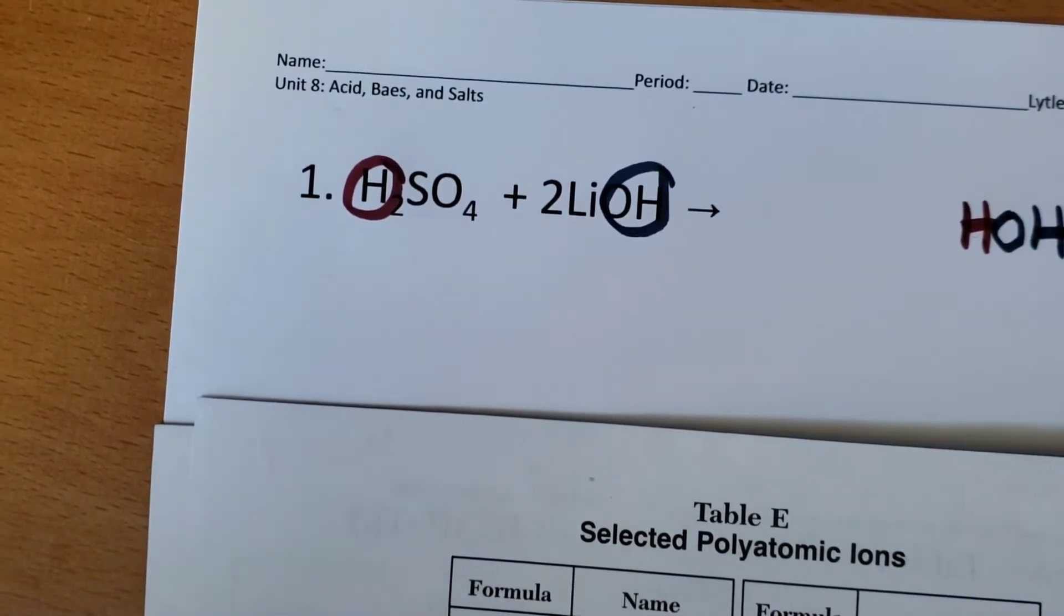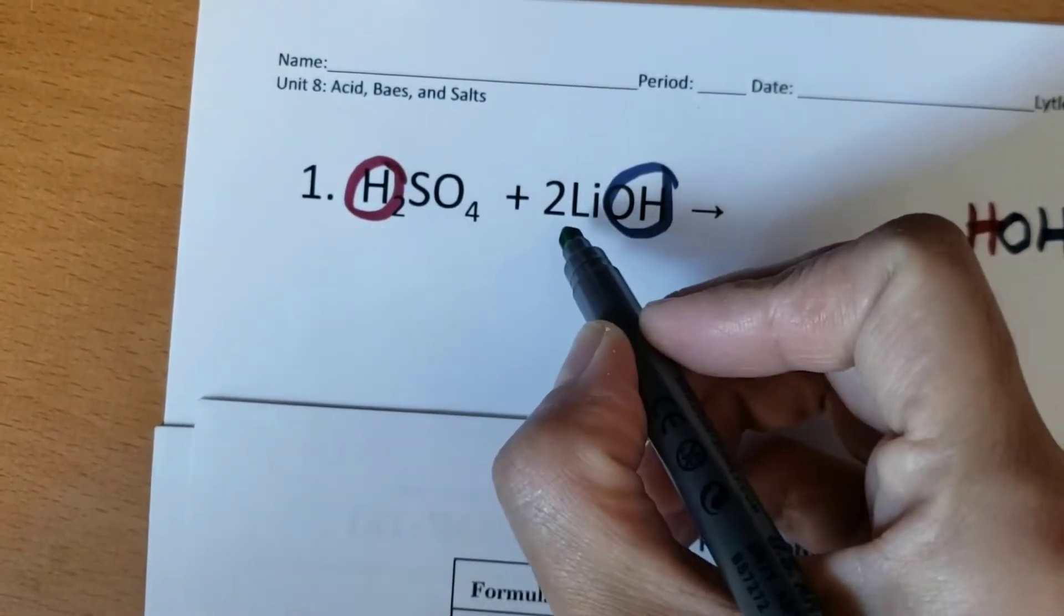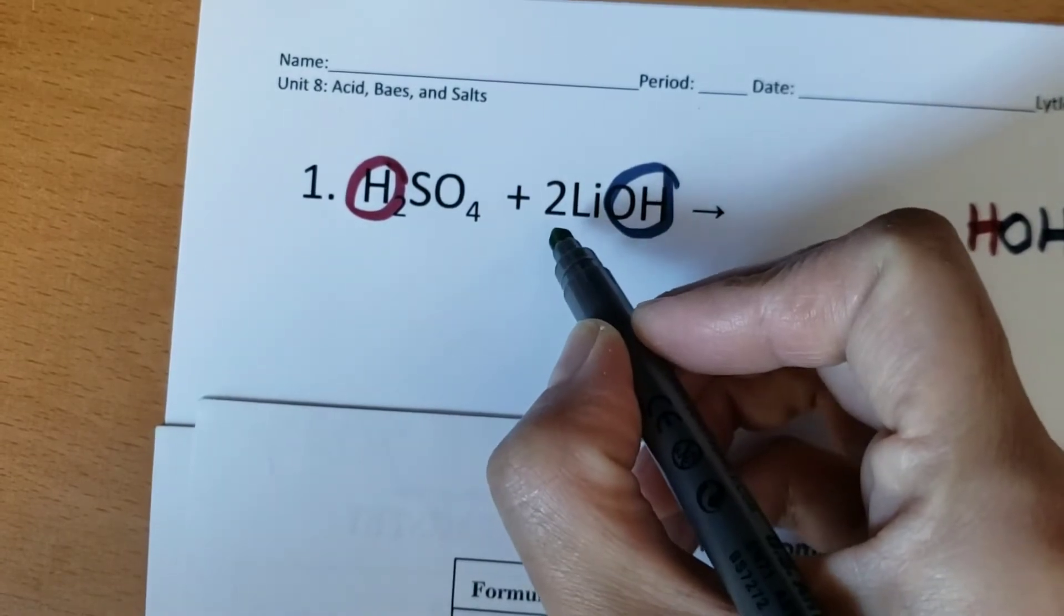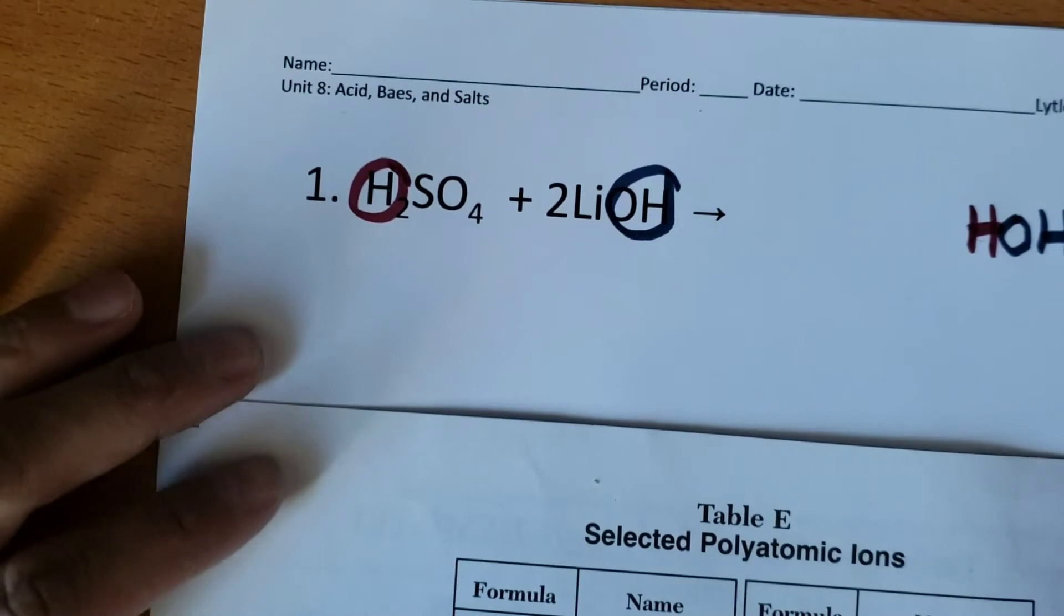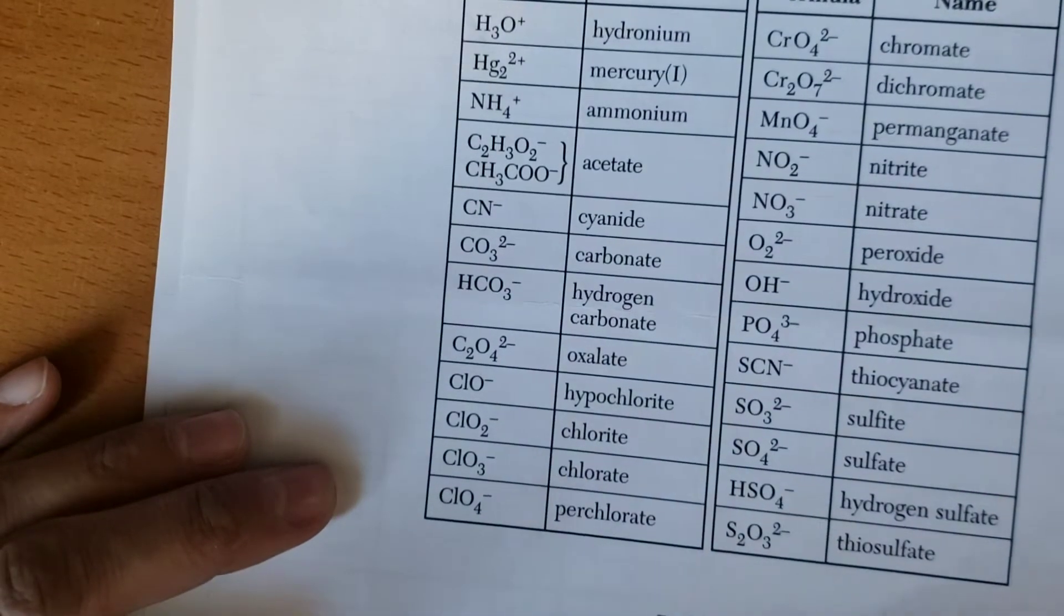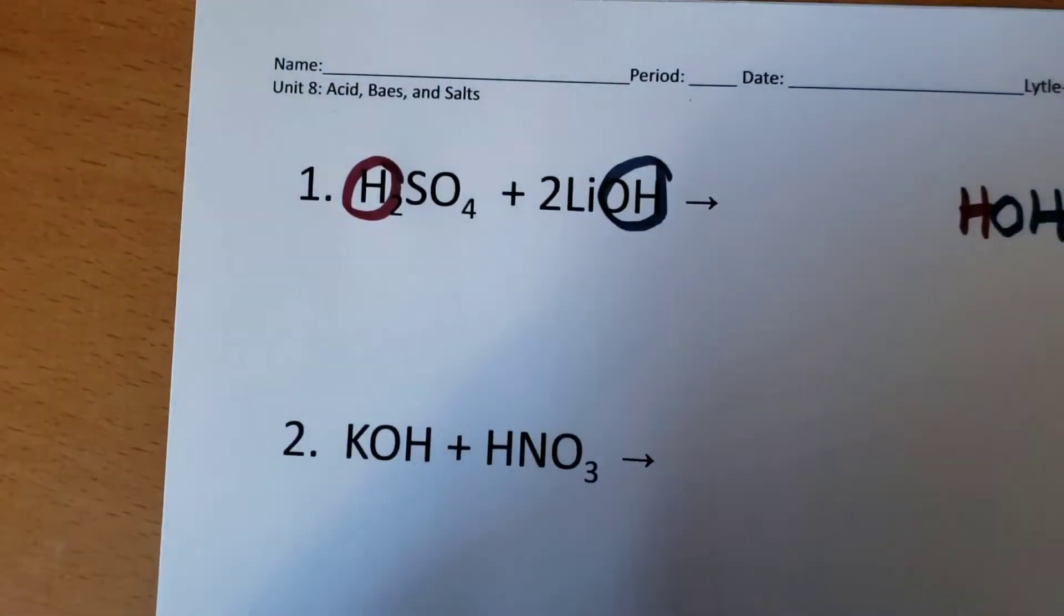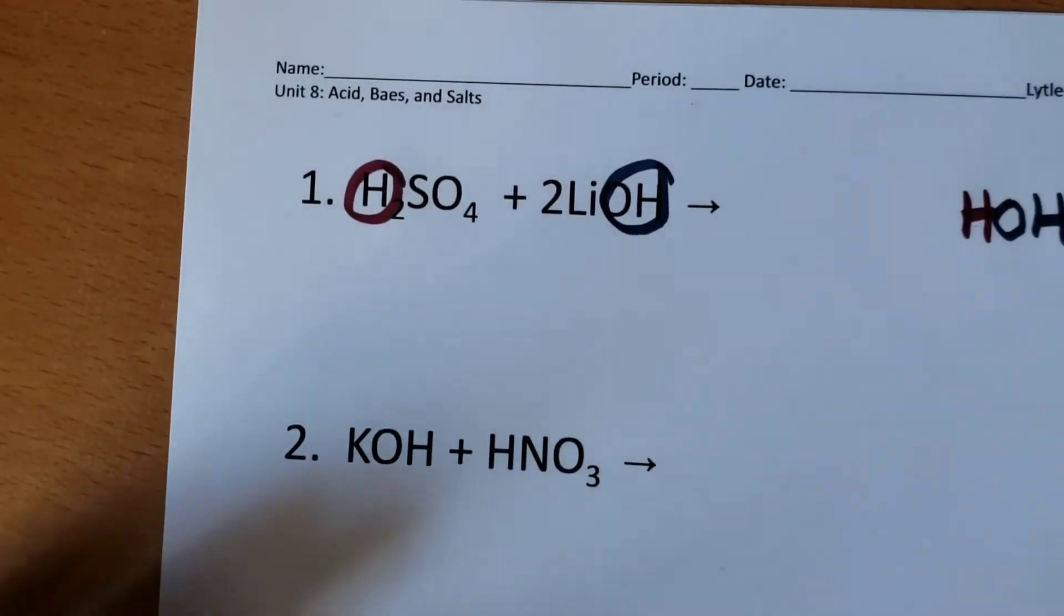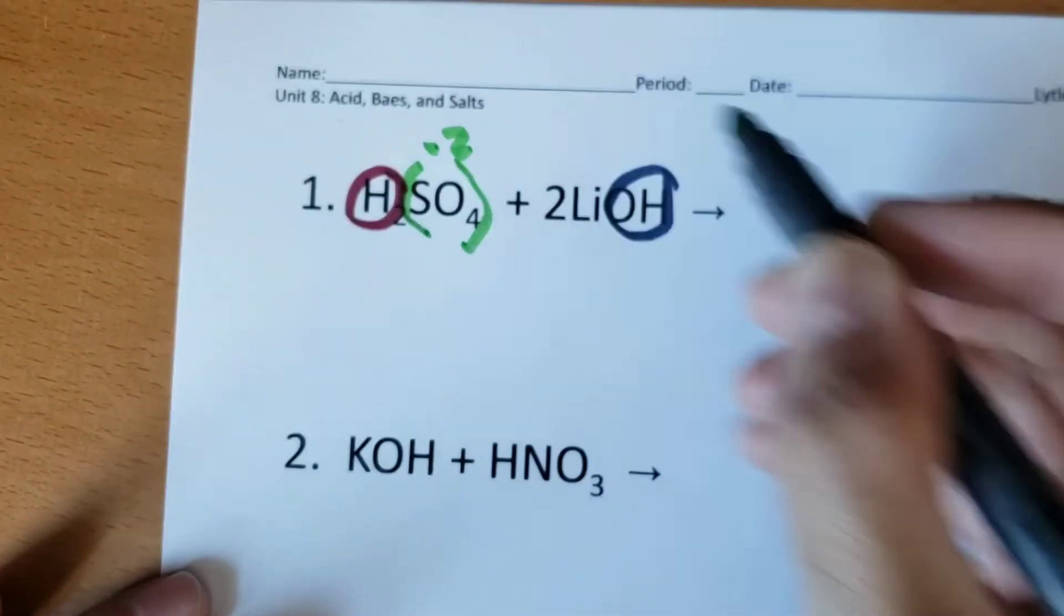And whatever is left over, which are the ionic substances here, lithium, and then this is sulfate. Sulfate is a polyatomic ion. You can see it here on reference table E. So sulfate is a whole ion that has a charge of minus 2. So I'm going to put it in parentheses and write a minus 2 up top.